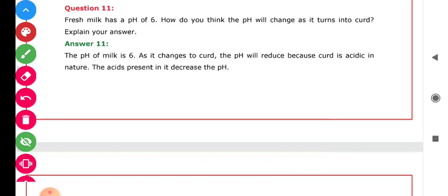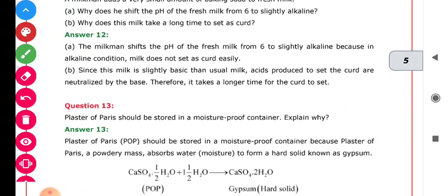As we know students, curd is sour in taste (dahi jo hai wo swad mein khatta hota hai). If milk is changing into curd, the pH value of the milk is decreasing because according to the pH scale, the more the substance is acidic, the lesser the pH value is. So when milk converts into curd, the pH value decreases. The acid present inside the curd will decrease the pH value.